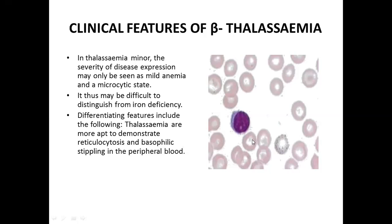The blood complete picture shows microcytosis, hypochromia, and target cells. Target cells are immature cells which come into circulation. In thalassemia minor, there is only microcytosis and hypochromia on peripheral smear examination and the patient is otherwise well.